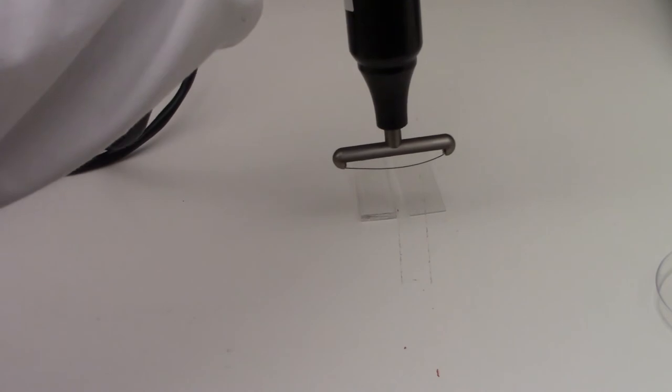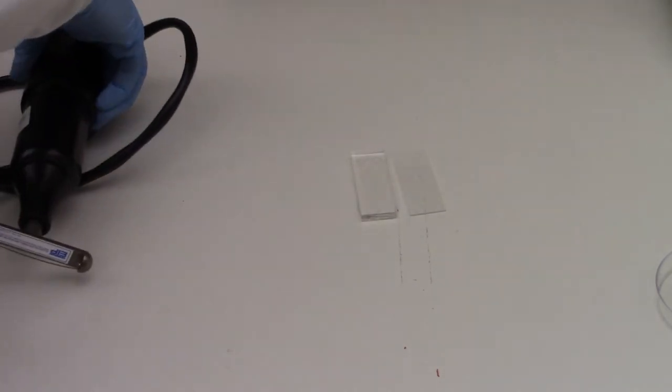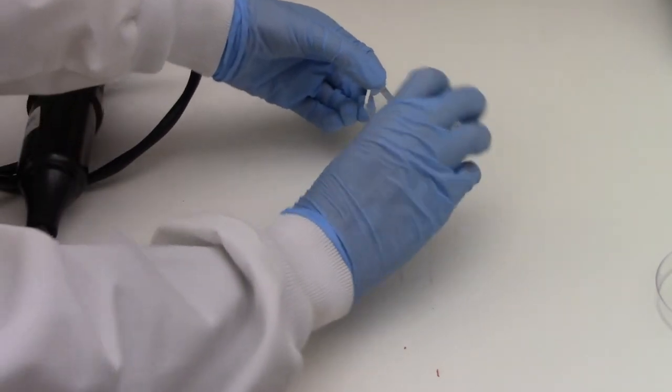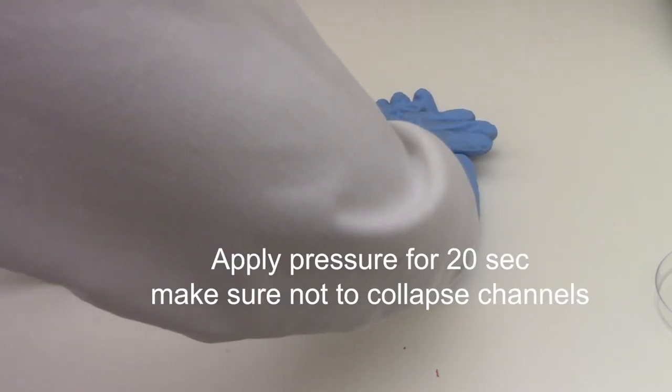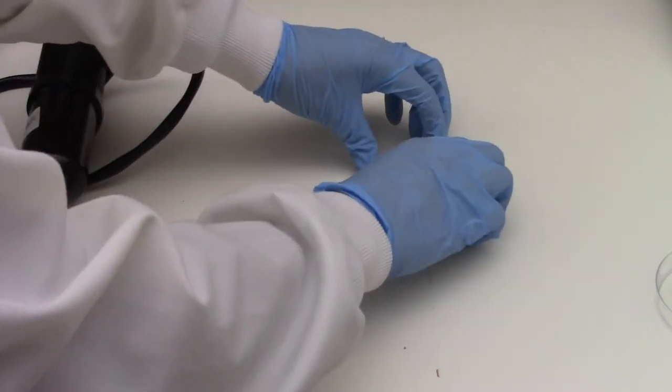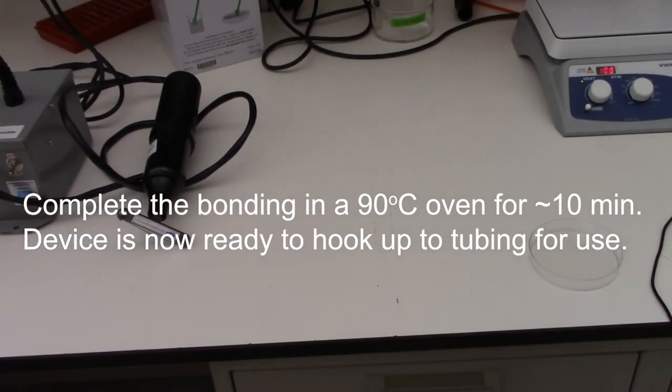Once that's done, turn the plasma wand off before setting it on the table and then quickly flip over the PDMS device onto the glass slide. Then apply, depending on how big your device is, either use your fingers or in this case, I'm using my whole hand, apply a light but firm pressure for about 20 seconds. And then the next step will be to lock this chip to a 90 degrees Celsius oven for about 10 minutes.